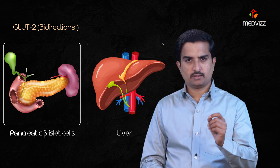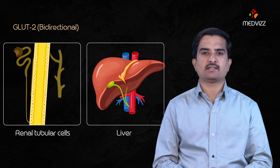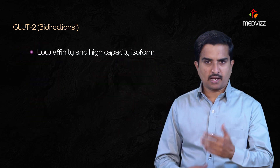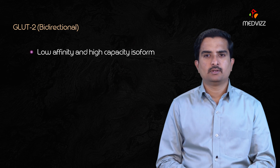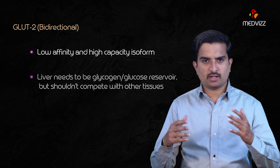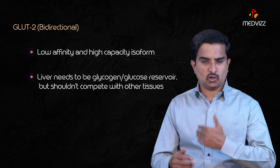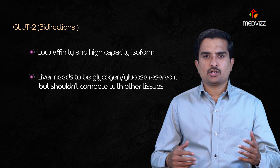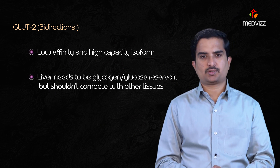GLUT 2 is also found in the liver, renal tubular cells, and the small intestine. It is a low affinity and high capacity isoform. The liver needs to serve as the glycogen or glucose reservoir but should not compete with other tissues.